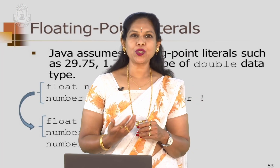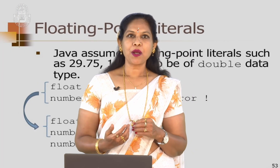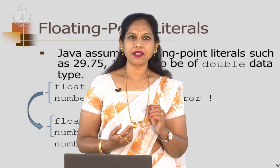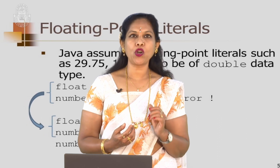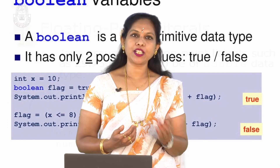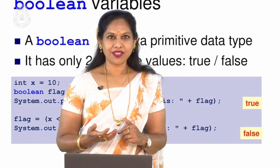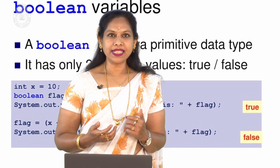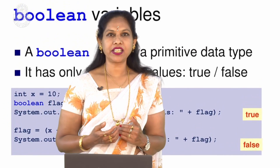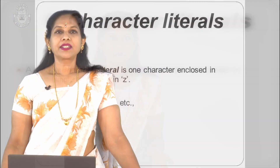Exponents can be used in floating point literals by using the letter capital E or small e, followed by the exponent. Boolean literals consist of the keywords true and false.